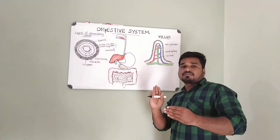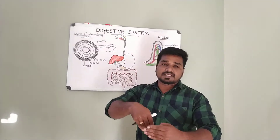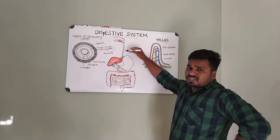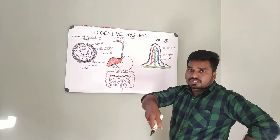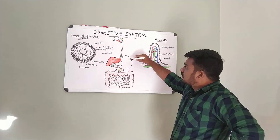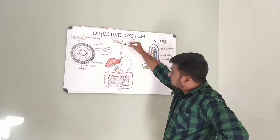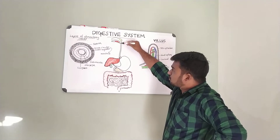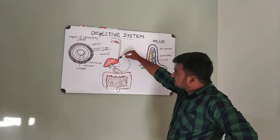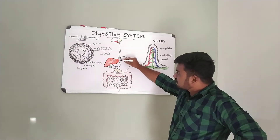The esophagus is approximately 25 cm in length, running from the pharynx down to the stomach. The stomach is a J-shaped structure that receives food from the esophagus.